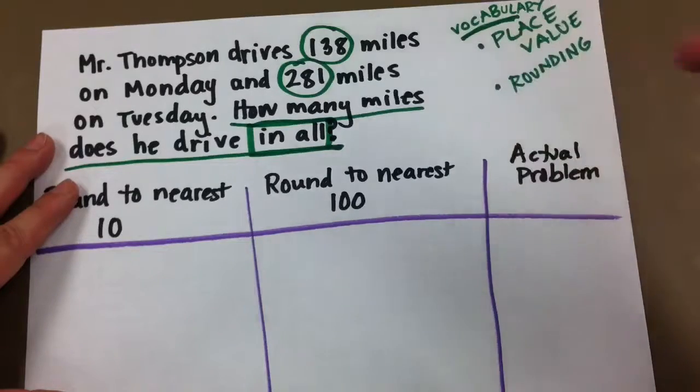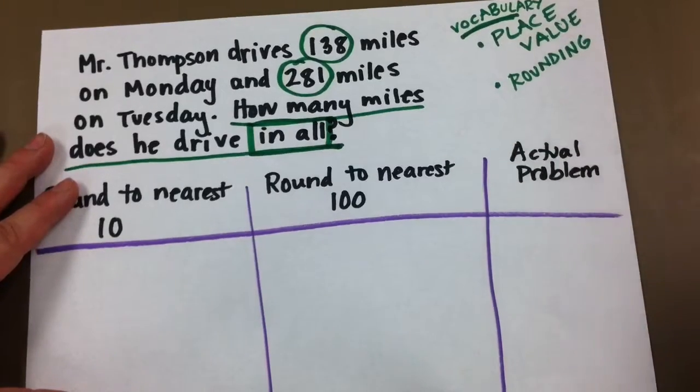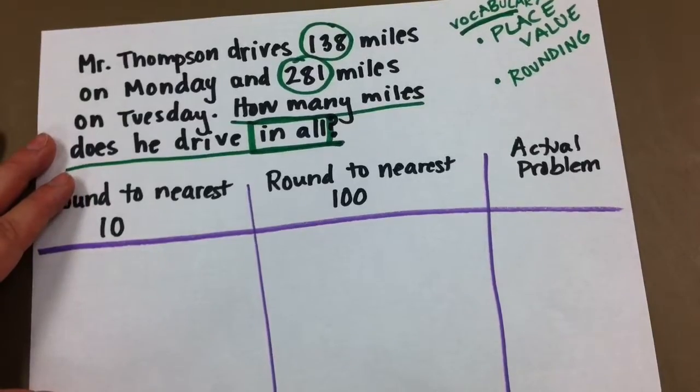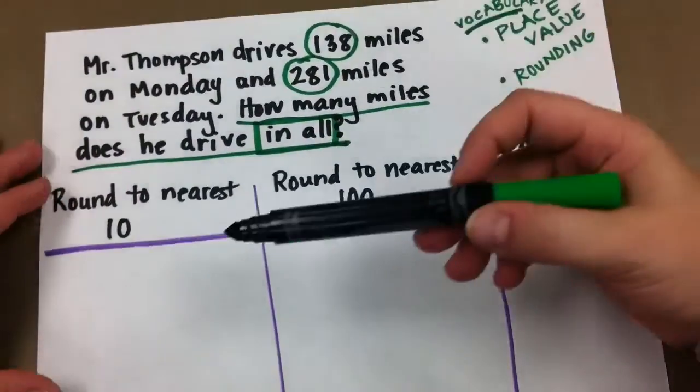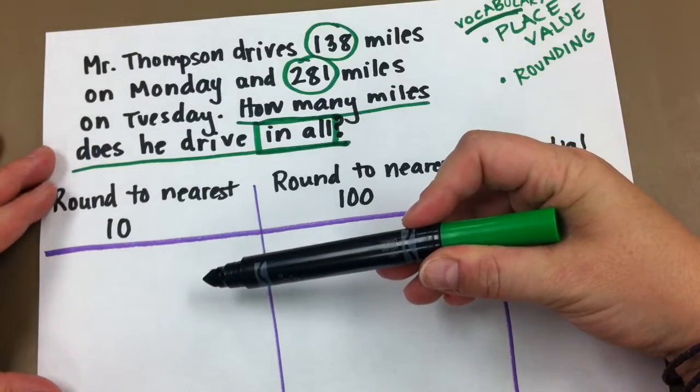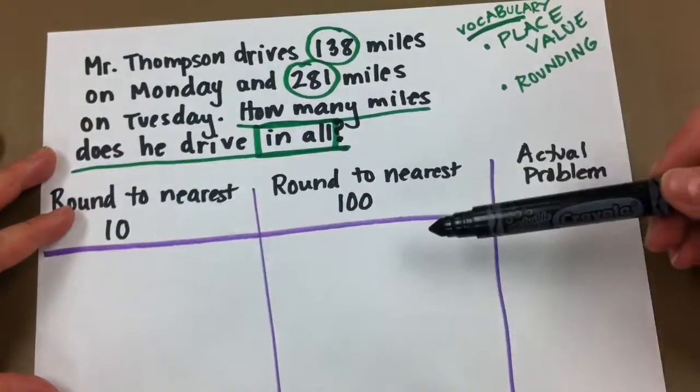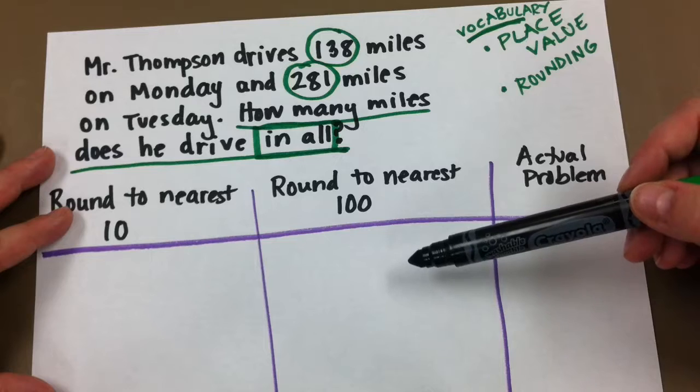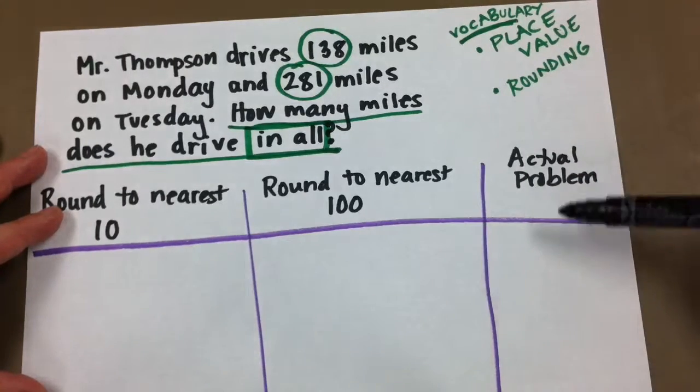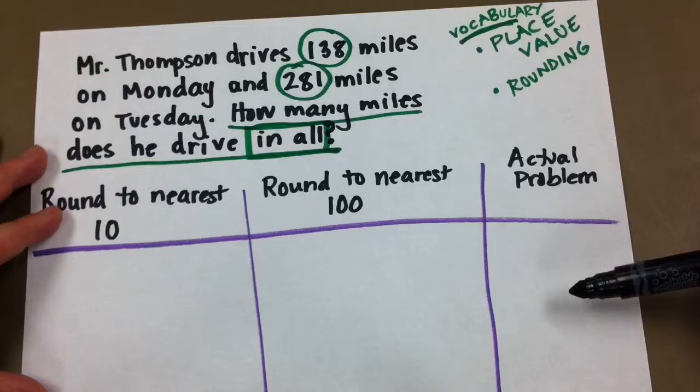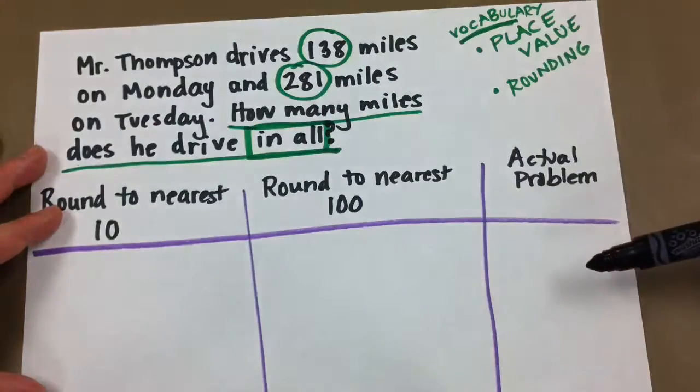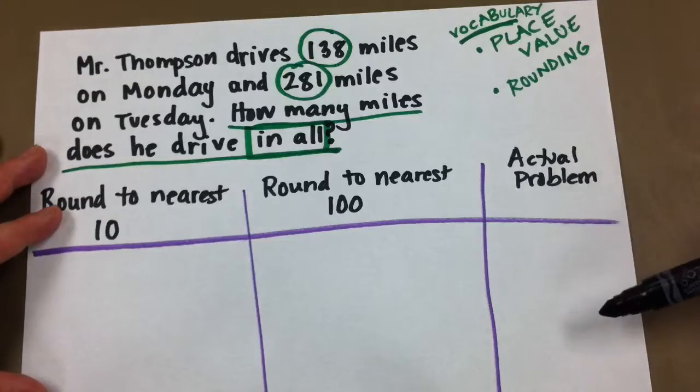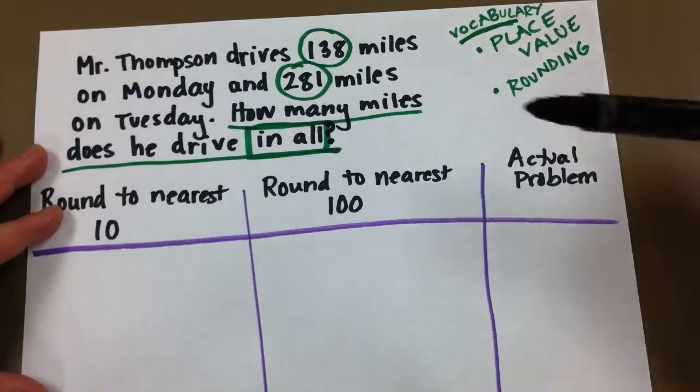We've got two numbers here that we need to add together. All right, so we're going to add this together in three different ways, boys and girls. We're going to add the numbers after we round each number to the nearest 10. We're going to add them after we round them both to the nearest 100. And then we're going to solve the actual problem. Then we're going to decide between which two answers are closest to the actual problem's answer. So here we go.